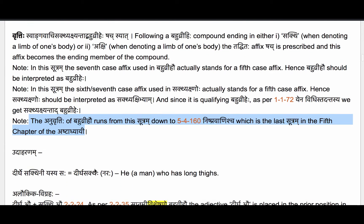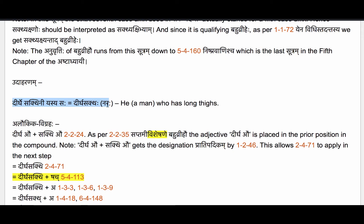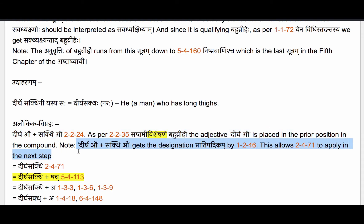Let us now take an example. The first example is Deerghasakthi — a man who has long thighs. The alaukika vigraha is Deerghhe au plus Sakthi au. Compounding is prescribed by Sutram 2.2.24, Aneka mannyapadharthe, which we are familiar with. As per Sutram 2.2.35, Saptami visheshane bahu vrihau, the adjective Deerghhe au is placed in the prior position in the compound. Now Deerghhe au plus Sakthi au gets the designation Pratipadikam by Sutram 1.2.46, Kritjhita samasascha, because we have formed a compound.